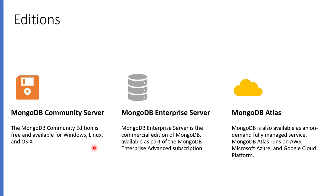These are the different editions available under MongoDB. You have the MongoDB Community Server, currently version 4.4, which can be installed on Windows, Linux, or Mac. There is the MongoDB Enterprise Server, a commercial edition with many additional features available by subscription. And if you want MongoDB in the cloud, you can use MongoDB Atlas, which is a very cool feature. Thanks for watching.